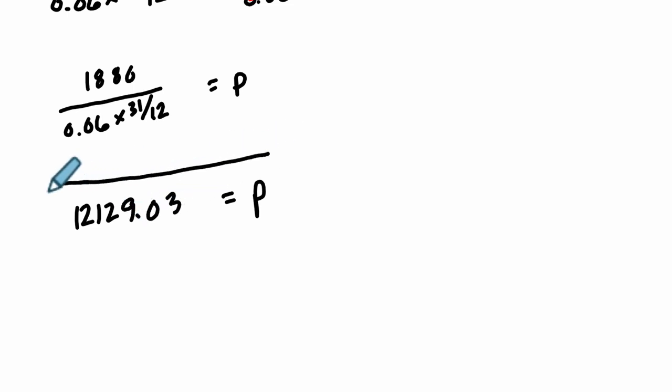So if we invest this principal amount in the account for 31 months at 6% simple interest, we would have a total of $1,880 of interest, which you can plug in and test out. Take this principle, multiply it by 31 over 12 times 0.06, and you should get this value up here. It's a good practice to get into.